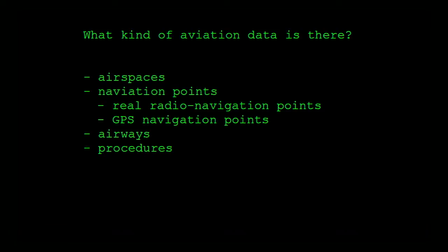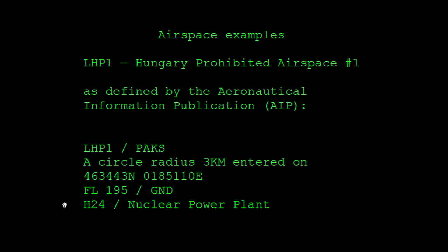When it comes to aviation nav data, what kind of data do we have? We have airspaces, we have navigation points which are sometimes real navigation points with a physical radio transmitter on the ground. Sometimes you have GPS navigation points which are totally made up - there's no physical item on the ground. We have airways, which are paths that you fly through, and procedures, which are a series of navigation points that you have to follow.